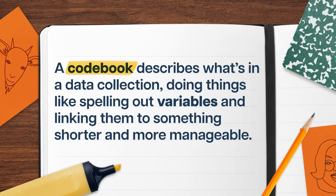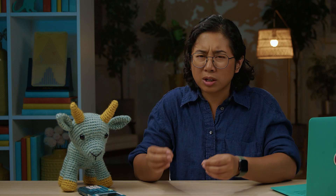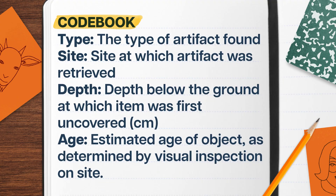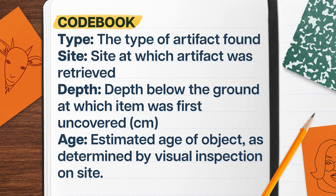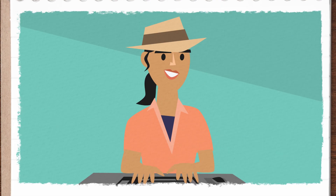So she creates what's called a codebook. A codebook describes what's in a data collection, doing things like spelling out variables and linking them to something shorter and more manageable. Codebooks are especially handy when working with a really long list of variables, something that comes up a lot when making a table. It's like a secret code, except the point isn't to obscure the meaning of something, but instead to simplify and streamline it. Aisha's codebook explains that 'type' means type of artifact, while other words like 'age' mean estimated age of object.